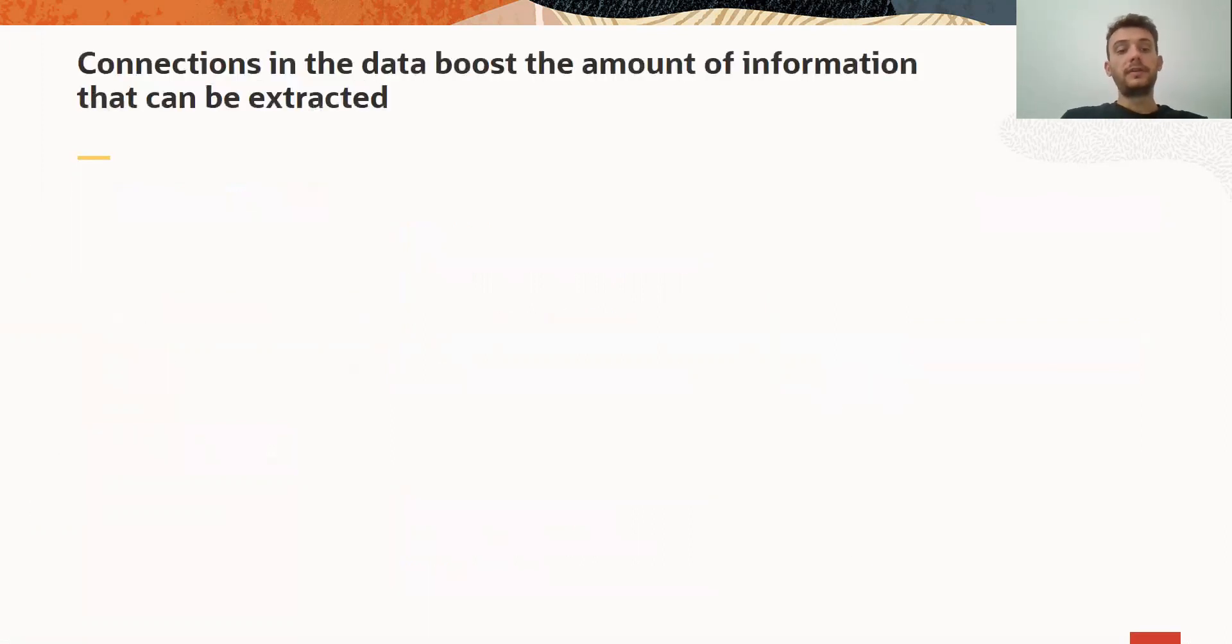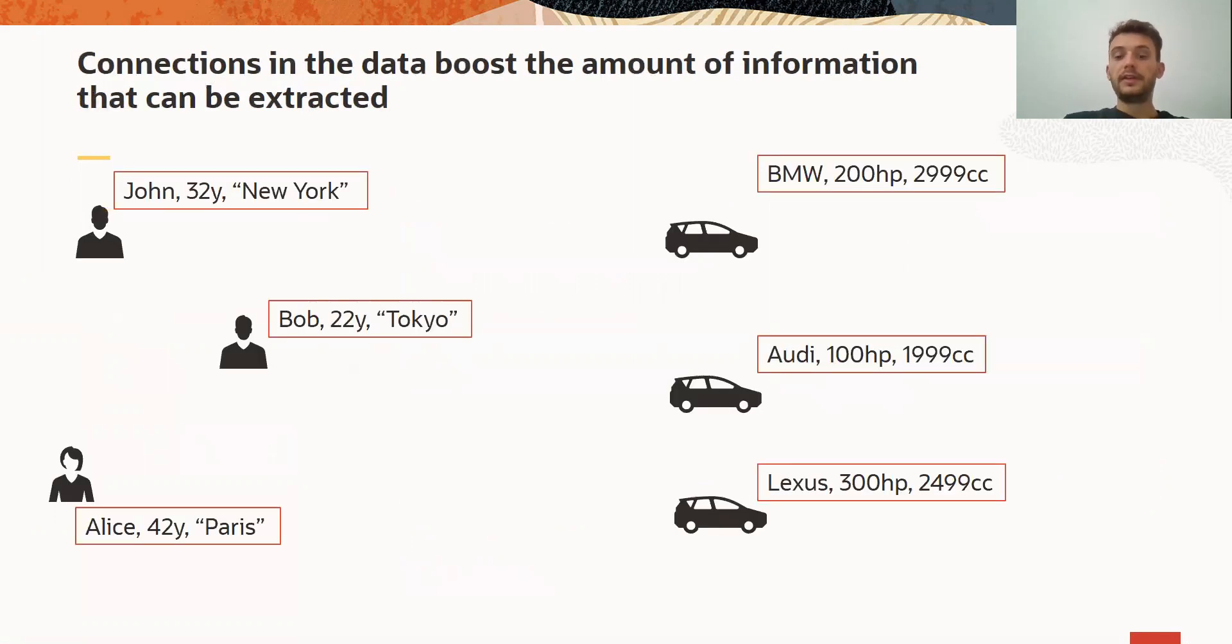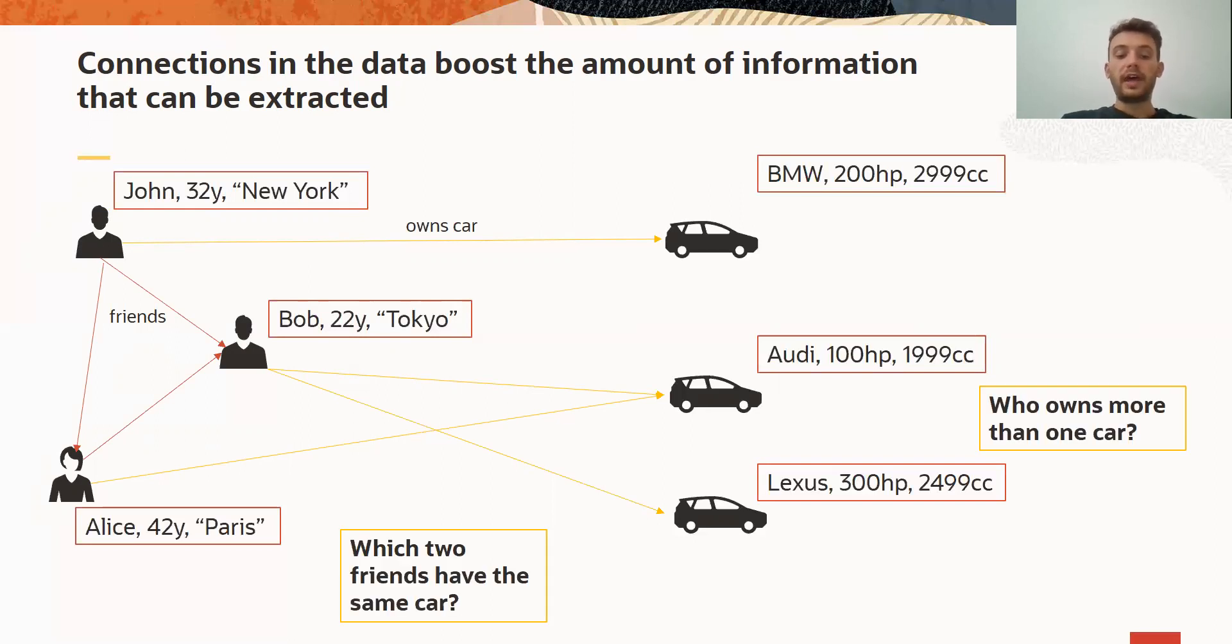Now, in order to boost the amount of information stored in our data, the first thing we need to do is to add connections. And in order to see this, I will illustrate this on the previous example. So let's assume we have our previous set of individual data points, and now we add connections between them. For example, people can own cars, and people can be friends of each other. Suddenly, the amount of questions we can ask on this data set is much bigger. For example, one can ask which two friends have the same car, or who owns more than one car.